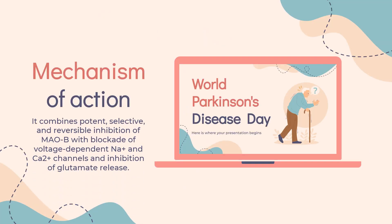Mechanism of Action. Safinamide is a unique molecule with multiple mechanisms of action and a very high therapeutic index. It combines potent, selective, and reversible inhibition of MAOB with blockade of voltage-dependent Na+ and Ca2+ channels, and inhibition of glutamate release. Safinamide has neuroprotective and neurorescuing effects in MPTP-treated mice, in the rat kainic acid model, and in the gerbil ischemia model.